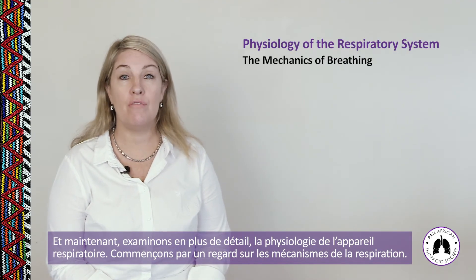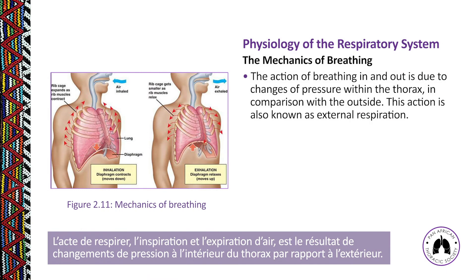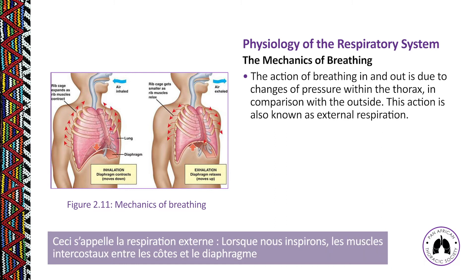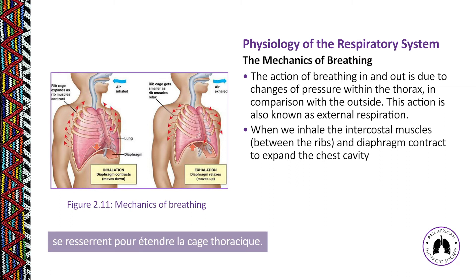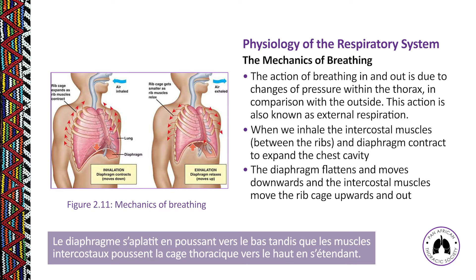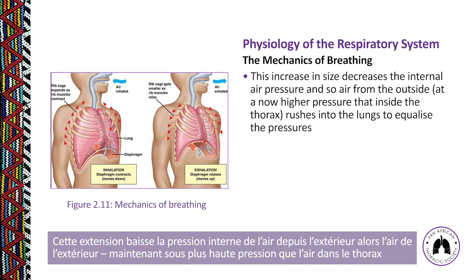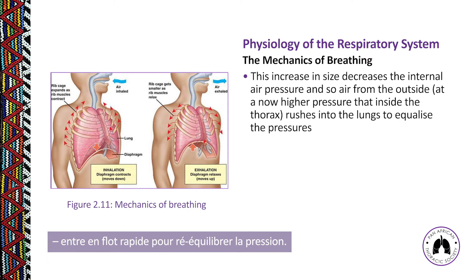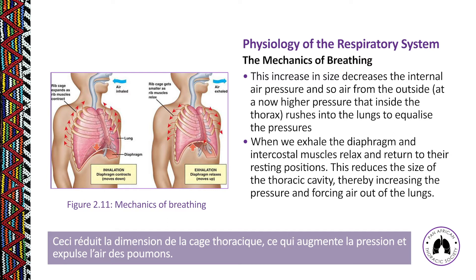Now let's look at the physiology of the respiratory system and the mechanics of breathing. The action of breathing in and out is due to changes of pressure within the thorax compared with outside — this is known as external respiration. When we inhale, the intercostal muscles and the diaphragm contract to expand the chest cavity; the diaphragm flattens and moves downwards while the intercostals move the rib cage upwards and out. This decrease in internal pressure causes outside air to rush in to equalize pressures. When we exhale, the diaphragm and intercostal muscles relax, reducing the size of the thoracic cavity and forcing air out.